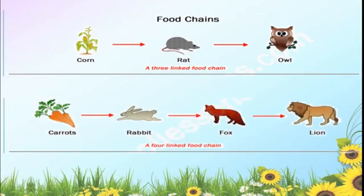Here is one more food chain with four links. Carrot is the food of rabbit, rabbit is the food for fox, and fox is the food for lion. This is also a food chain — they are connected to each other for food. We get so many food chains in our environment.